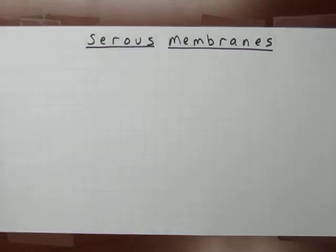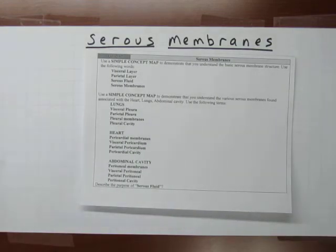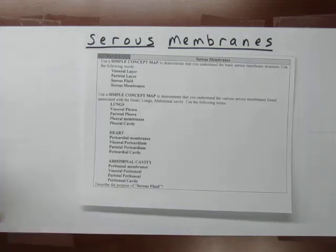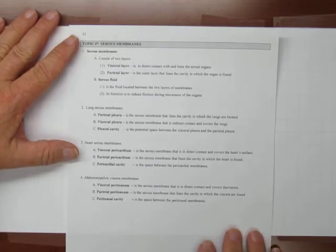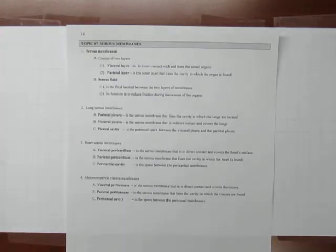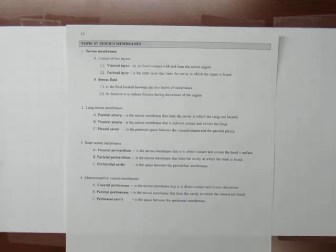This video will discuss serous membranes — Topic 7 of your study guide. There are two ways to learn this topic: one is to cover all the listed points in the back of the study guide and memorize them. The problem is it's a bit difficult to recall that correctly and quickly, so we solved that problem by making a concept map. There are many ways of doing concept maps; this is just one way I've done one for this particular topic.